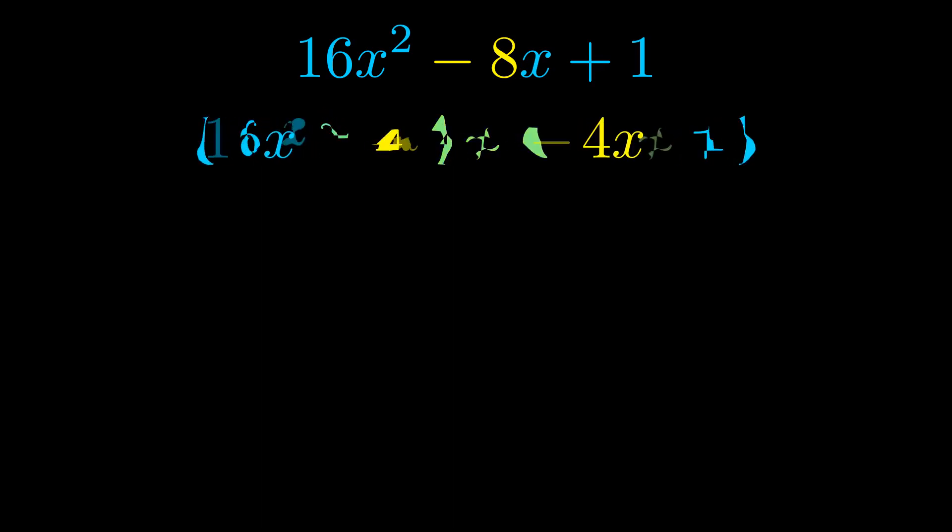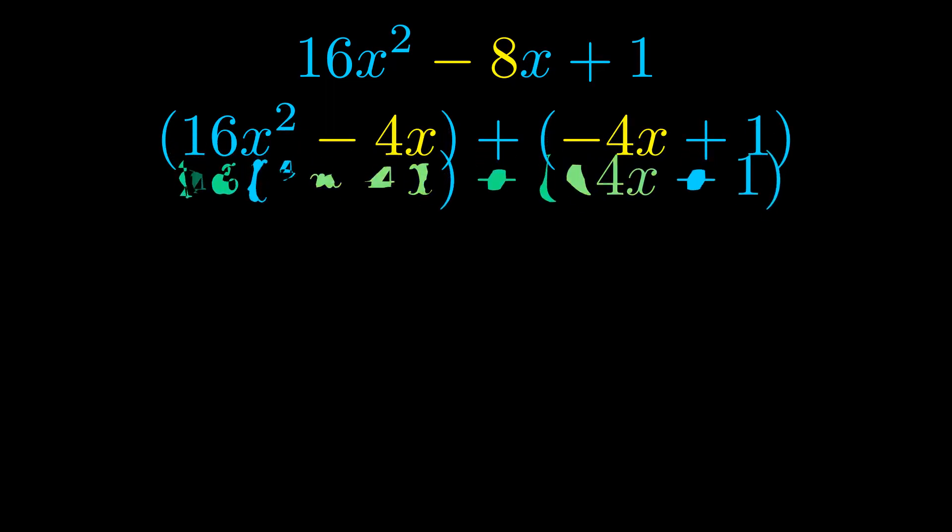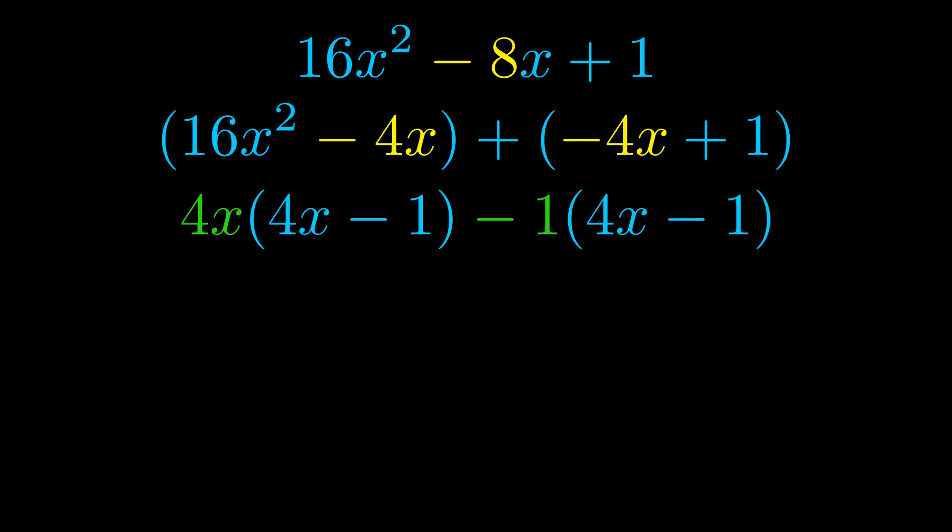Once we've done this we go ahead and put parentheses around the first term and the last term so that we can take the greatest common factor out of both terms. We can see the greatest common factor is now outside in green.